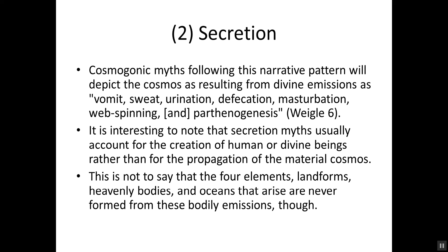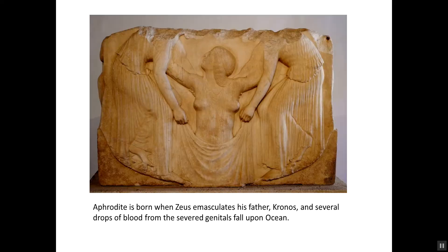Secretion is when a god secretes something from his body from which the world is created. These aren't always pleasant things. For example, in the myth of Bumba from our anthology, he feels horrible, has a terrible stomachache, and winds up throwing up the world. Anything that comes from the body counts — these myths mostly talk about the creation of humans or other deities, but we also see it in creating geographical features. Here we have an image of Aphrodite: when Zeus cuts off his father's genitals and throws them into the ocean, the drops of blood from this mutilation result in the creation of Aphrodite, and she's born that way.